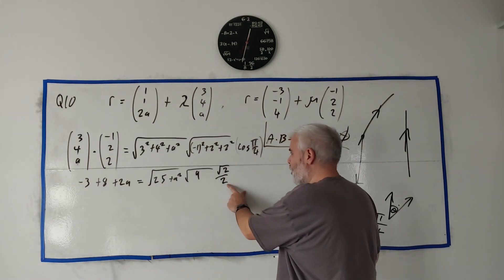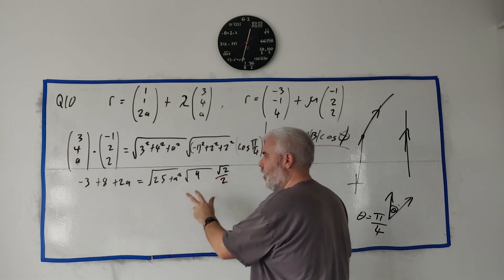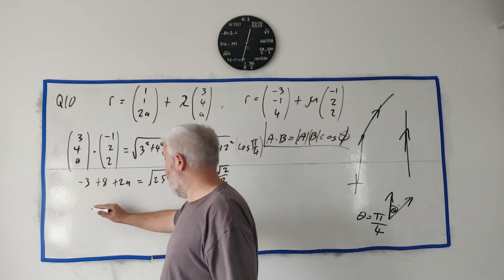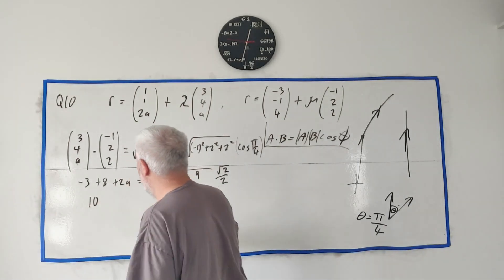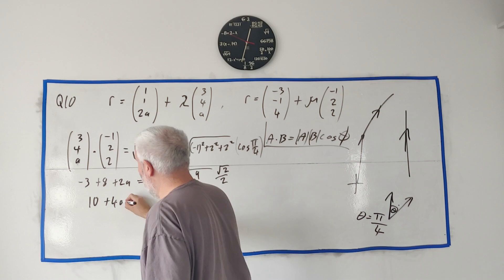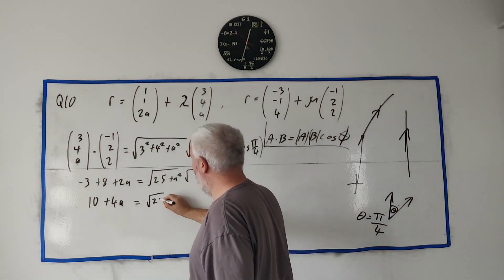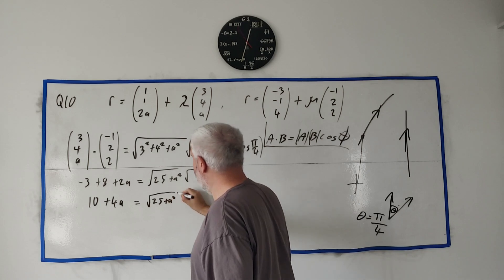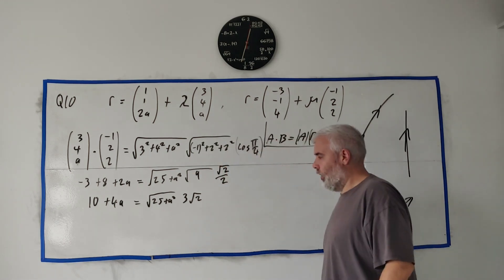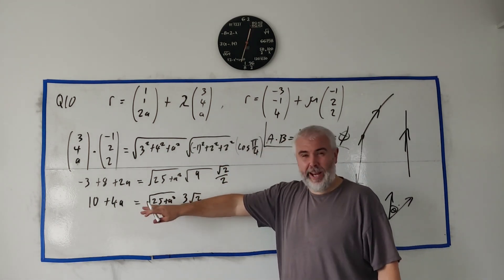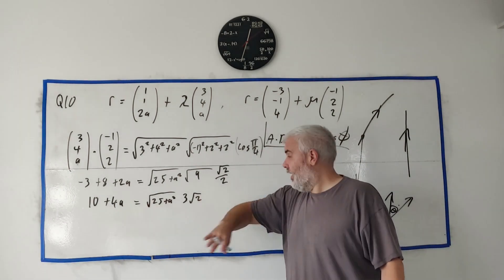We can't really get this any neater than this and we need to get rid of this square root at some stage. Square both sides—that's the easiest way. Squaring the left side becomes 100 + 80a + 16a². Squaring the right side, the square of this is 25 + a², the square root of 3 is 9, square root of 2 is 2, so that's 18, and that's multiplying.